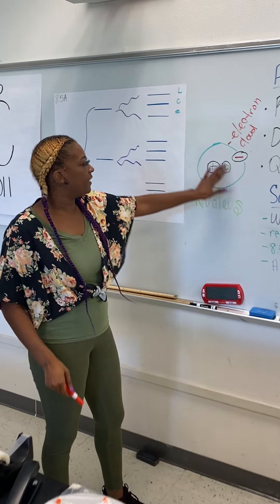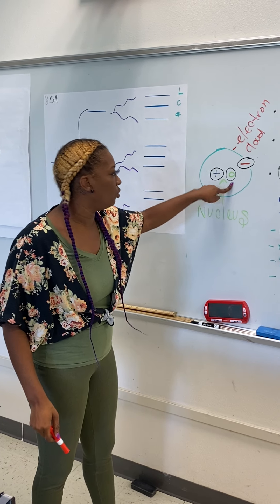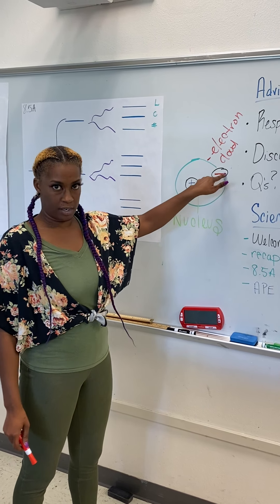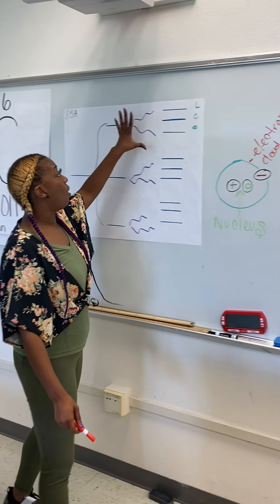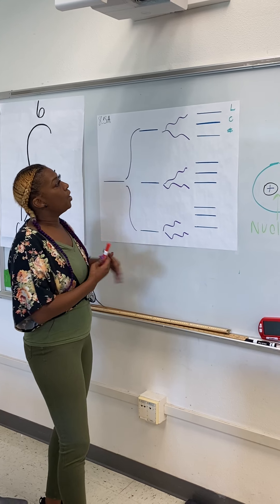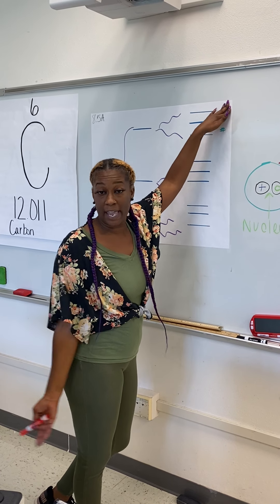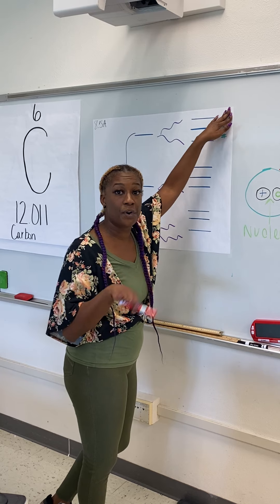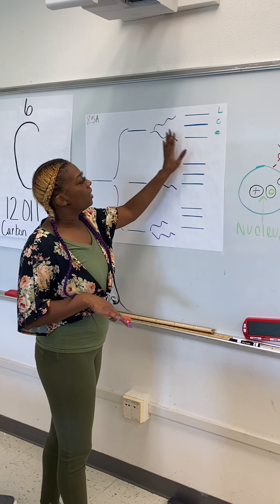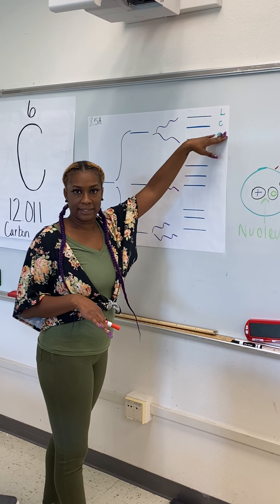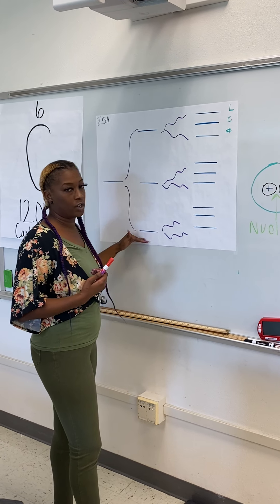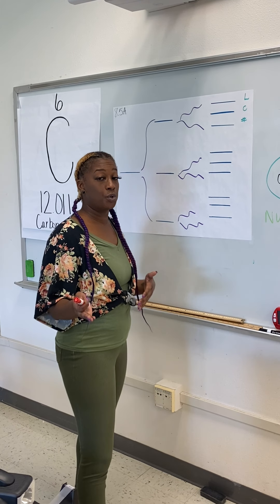So we have the nucleus in the middle that has protons and neutrons, and then we have the electron cloud that has electrons. Now we're going to fill out a chart. One of the lines is location — where can you find it? The second one is the charge. The third one is the mass — how heavy is it? We're going to do that for all three particles together, and then you're going to do it on your own.